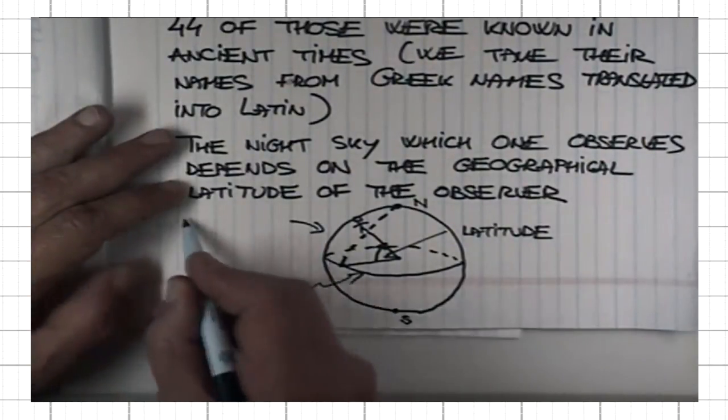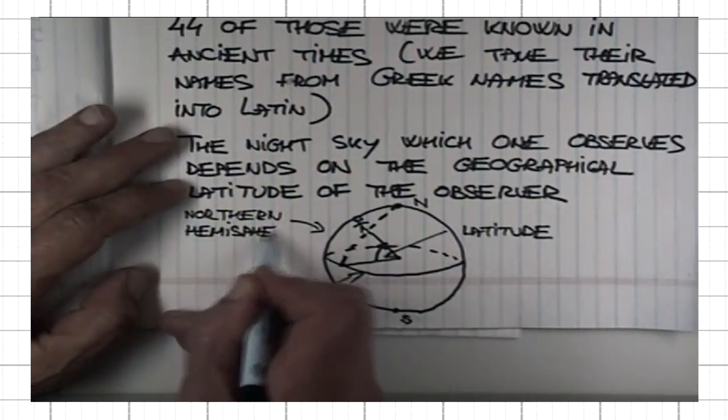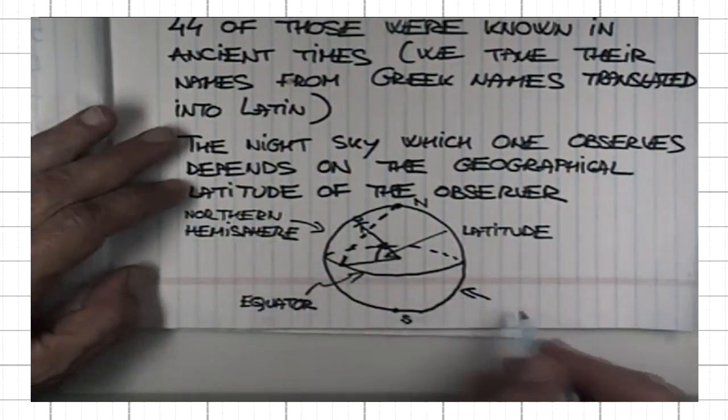Above the equatorial plane, we have the northern hemisphere. The other half is the southern hemisphere.